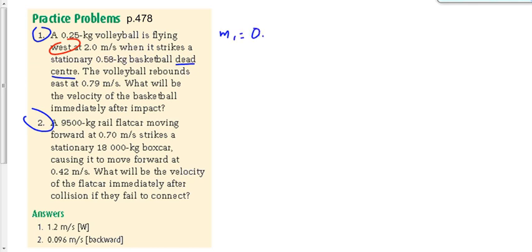Now that we know that, now that we've got a better idea of the big picture, let's write down some givens. M1 is 0.25 kilograms, the mass of the volleyball. M2 is 0.58 kilograms, the mass of the basketball. We've got 2.0 meters per second and 0.79 meters per second. Tell me what the 2.0 meters per second is, is that V1 or V2? That's V1, the velocity of the volleyball. Is it V1i or V1f? It's V1i, the initial velocity of the volleyball.